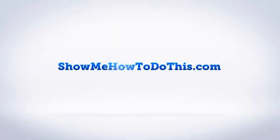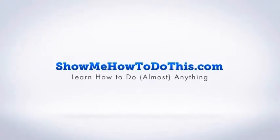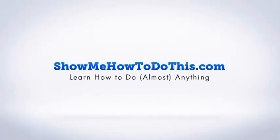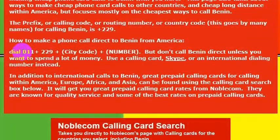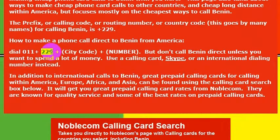If you have friends or family in Benin and you would like to be able to call them, it's quite simple. From the United States, all you would do is dial the international calling code, which is 011, and then you would dial 229, which is the country code for Benin.